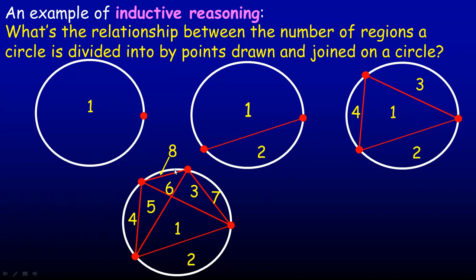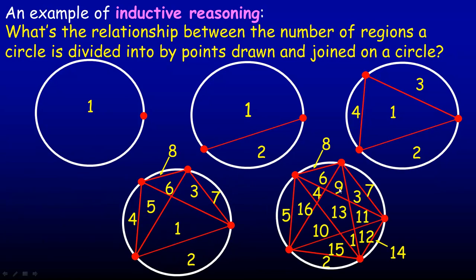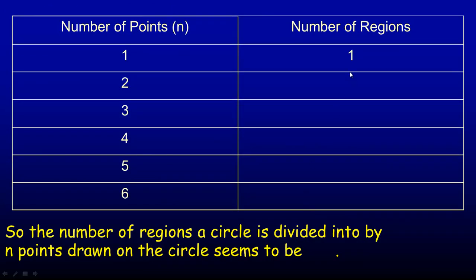With four points, we end up getting eight regions altogether. It gets a bit messier because there are a lot of regions. If we draw a circle and plot five points and count them all up — the last one I labeled — there actually are 16 regions. We'll organize that in a table: two points gave two regions, three points gave four, four points gave eight, and five points gave 16.